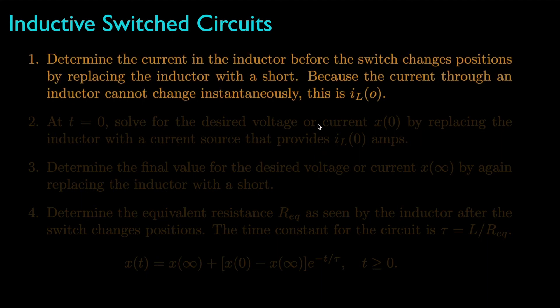First, we determine the current in the inductor before the switch changes positions. To do this, we use the fact that an inductor behaves like a short in a steady-state DC circuit. And because the voltage across an inductor is proportional to the derivative of the current through it, that current cannot change instantly, because if it did, it would result in infinite voltage.